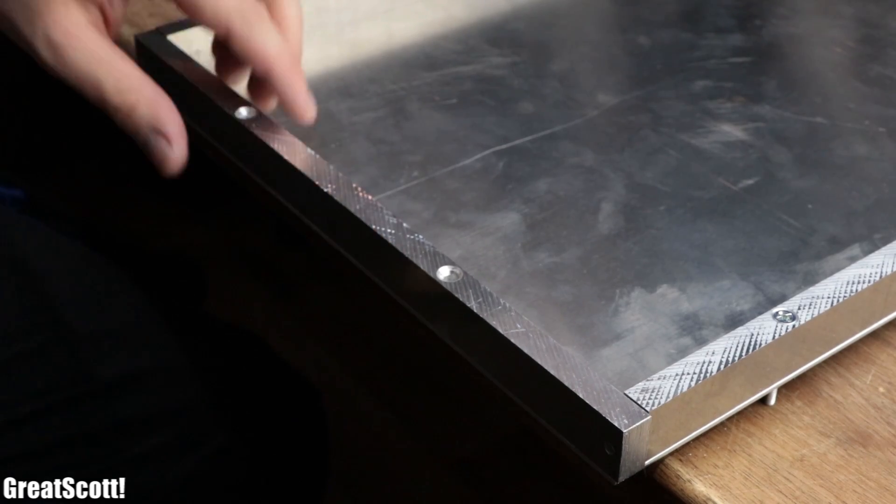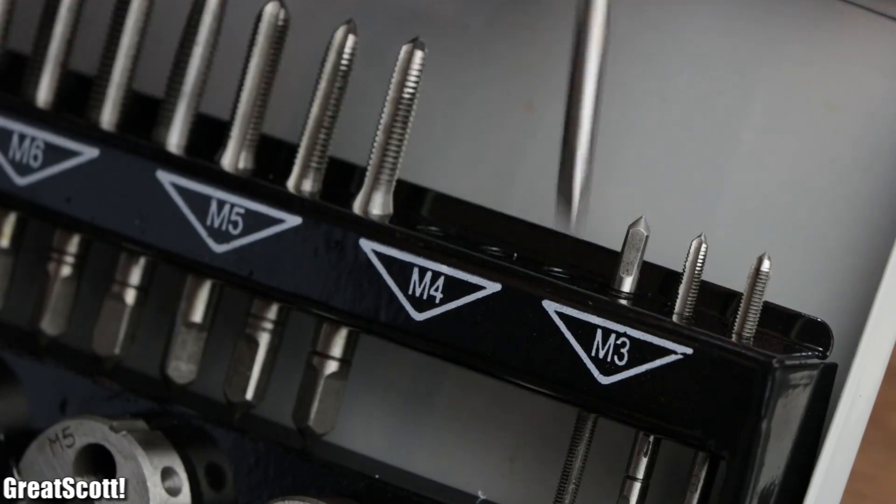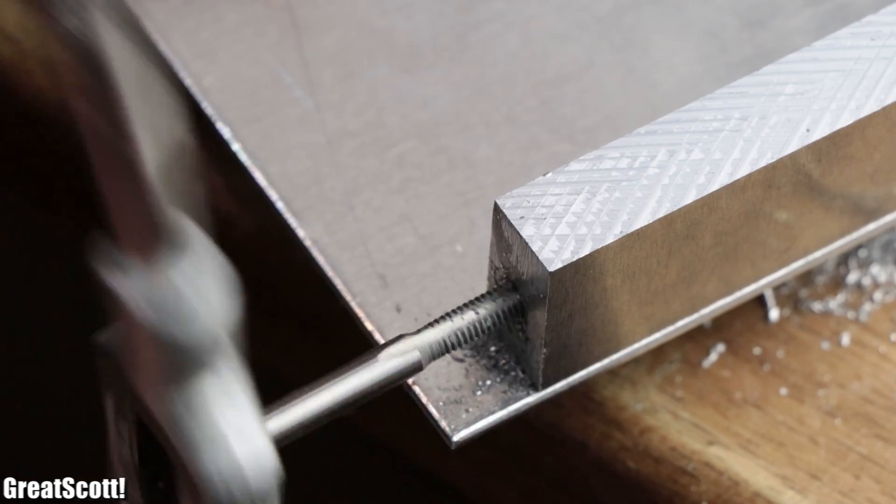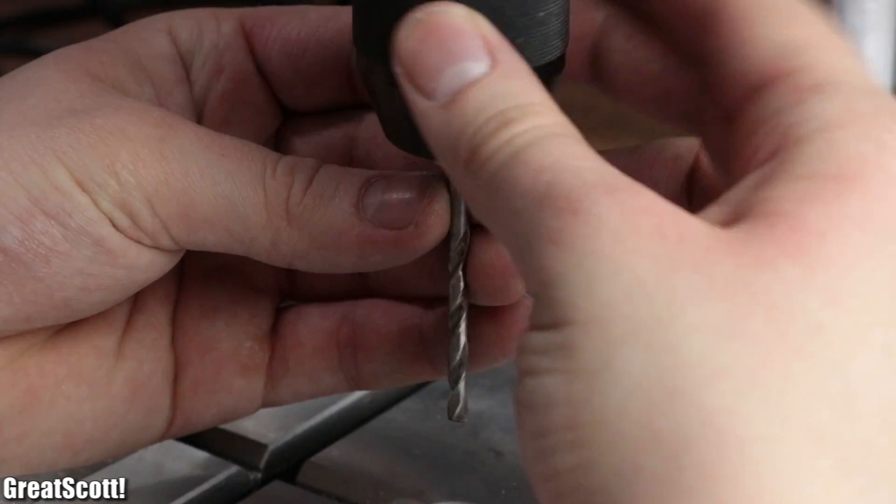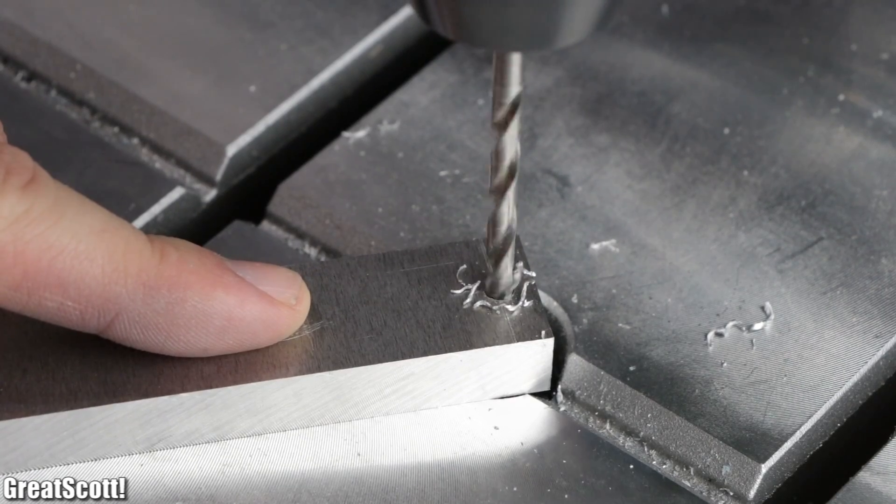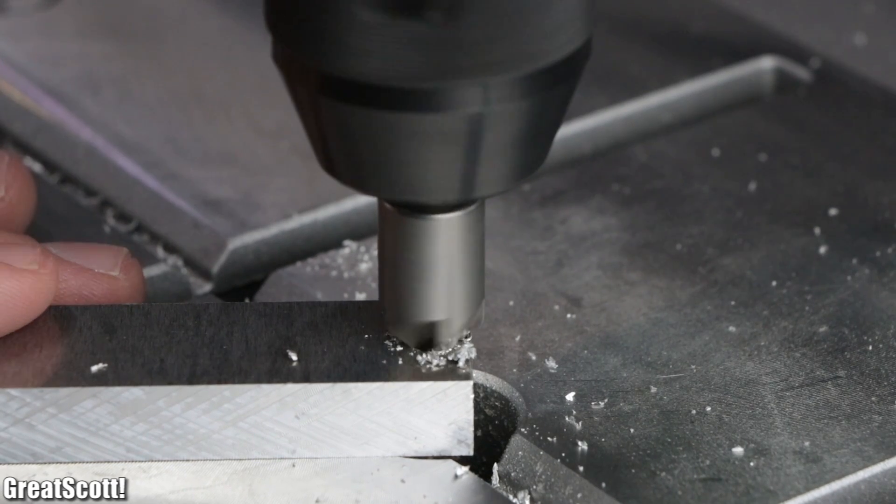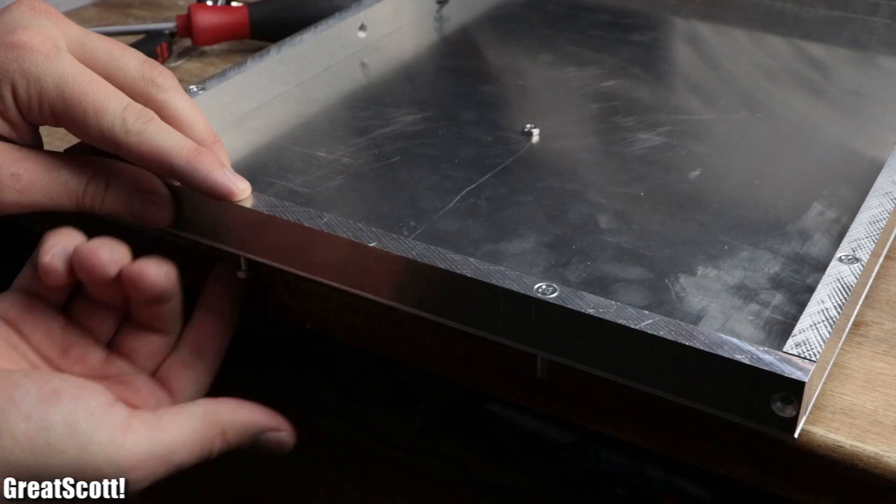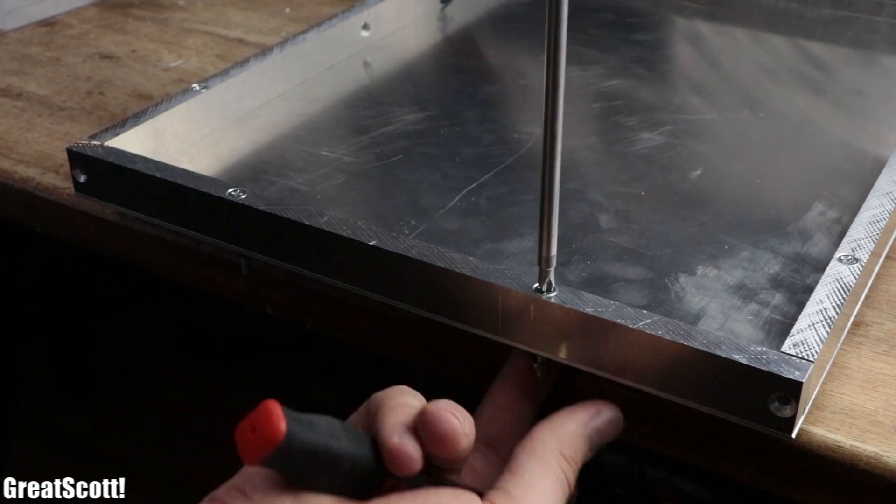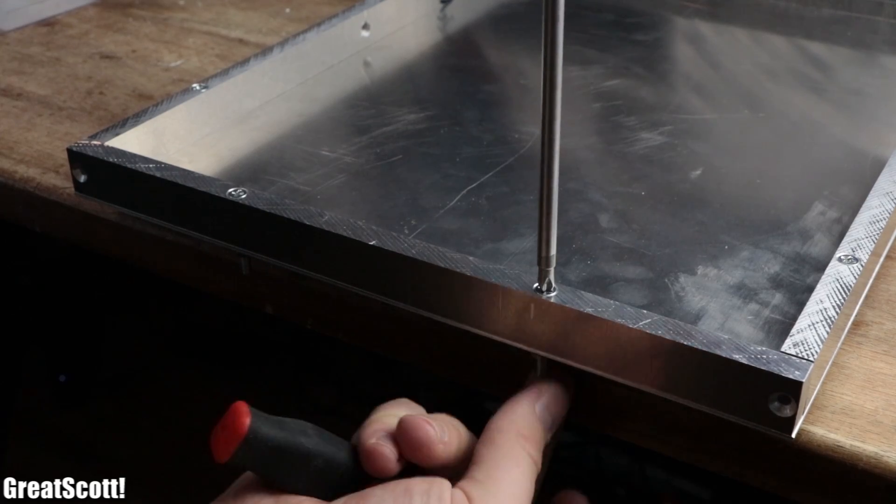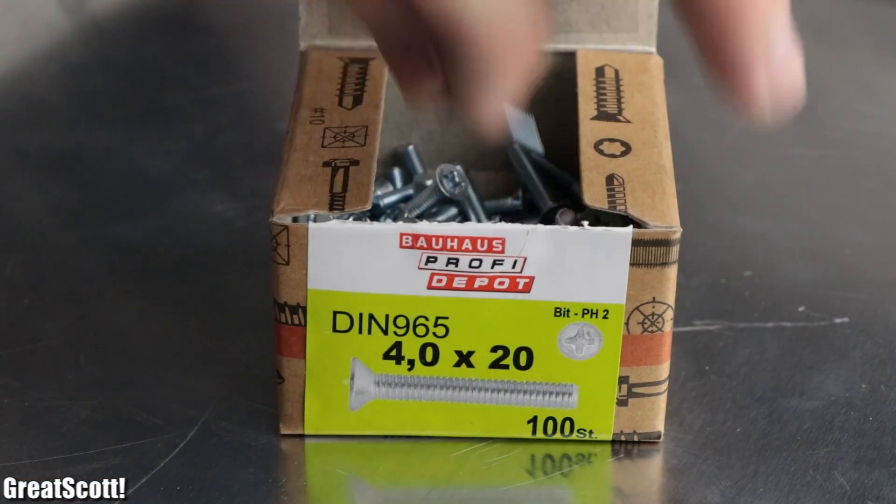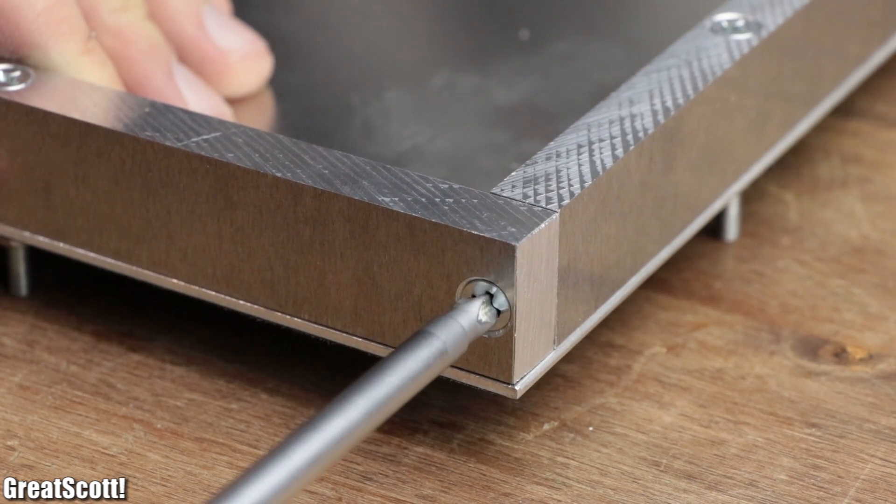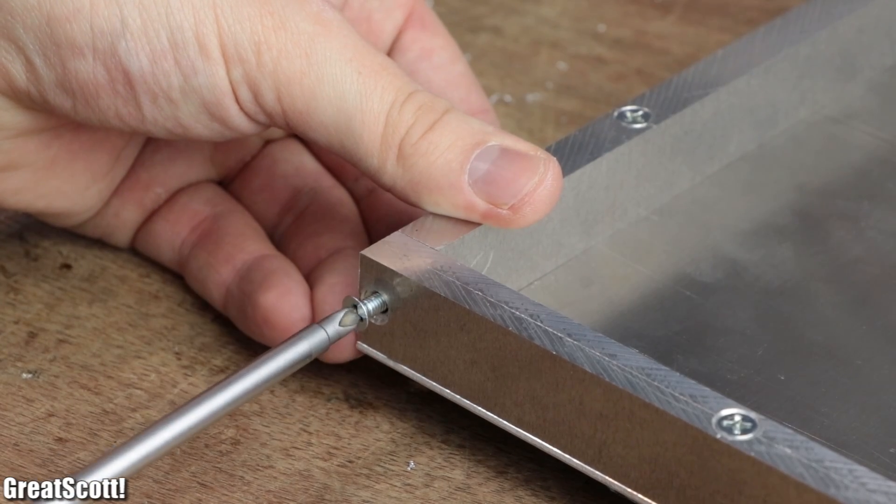Afterwards, I removed the shorter bars once again, used an M4 tap set to create threads in the longer pieces, and extended the 3.2 mm holes of the shorter pieces to 4 mm and countersank their top screw holes. After remounting the removed pieces to the plate for the 100th time, it was now an easy task to use shorter M4 screws to link the square pieces together and thus increase their structural integrity.